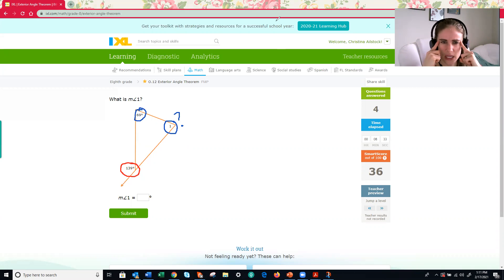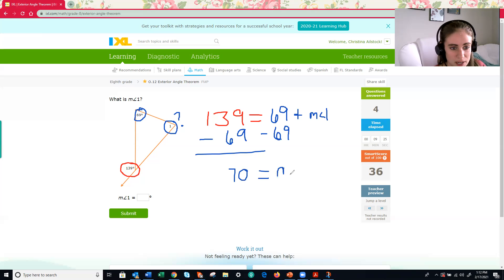Let's write that out as the equation so we can better see what we need to do. So my exterior angle, which in this case I know that value. So 139 degrees is equal to the sum of my two interior angles. So 69 degrees plus my missing angle measurement. What does that mean I need to do to find my missing interior angle? Hopefully you said subtract. We're going to subtract 69. So what is 139 minus 69?